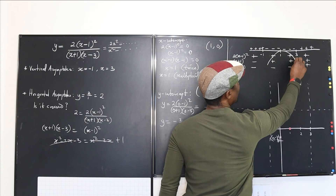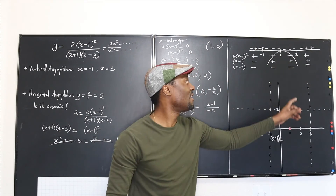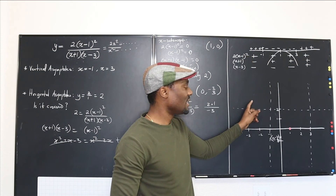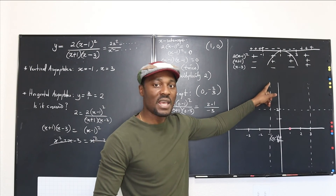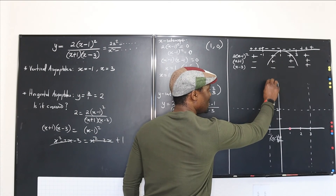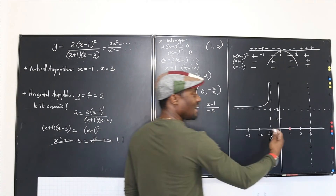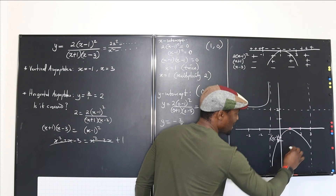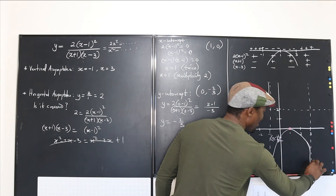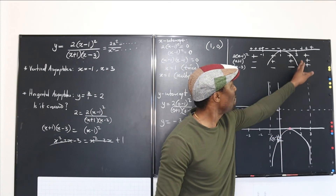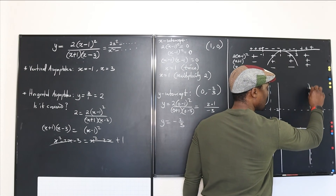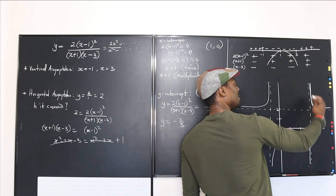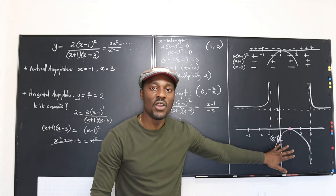Based on the sign chart, the graph comes from above, goes negative between the asymptotes, and because x equals 1 has multiplicity 2, the curve touches the x-axis there and turns back — confirming it doesn't cut through. The graph then rises back toward the horizontal asymptote y equals 2 on the left side, and beyond x equals 3 it's positive again, going upward toward y equals 2. The curve approaches the asymptotes but never reaches them.